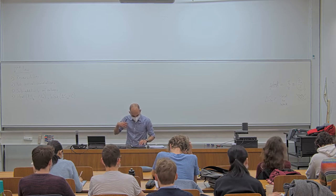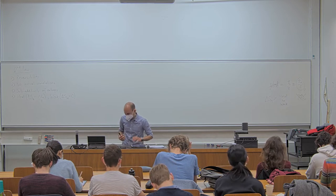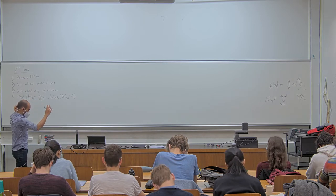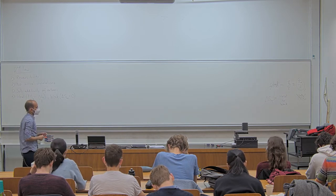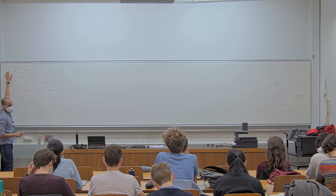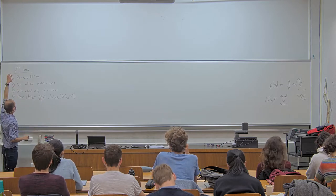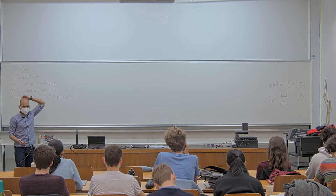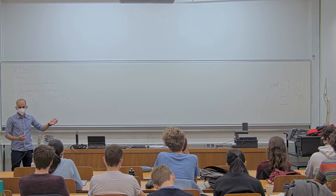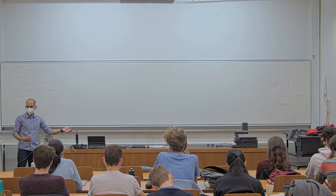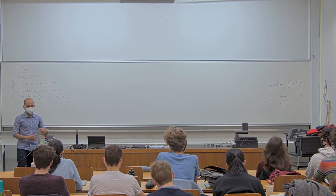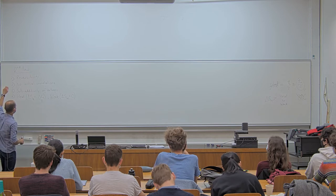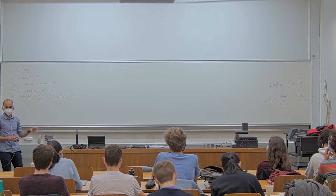To revisit what we did in the last lecture: at the end we got the statement that delta S_m is greater or equal to something, and it was the first example of a second law of thermodynamics in this course. We already had one version when we talked about passivity, but that was just a no-go theorem.